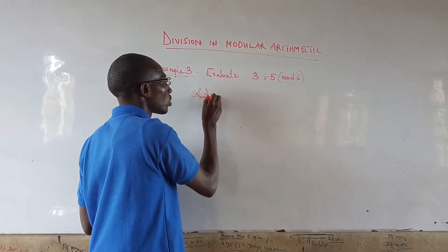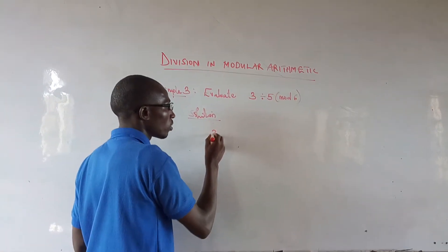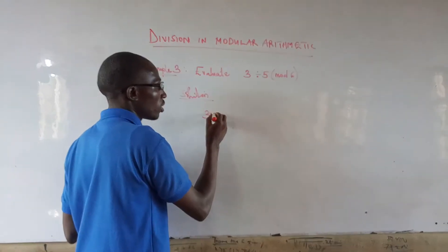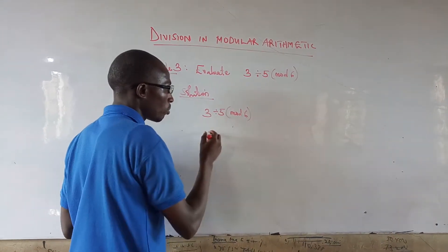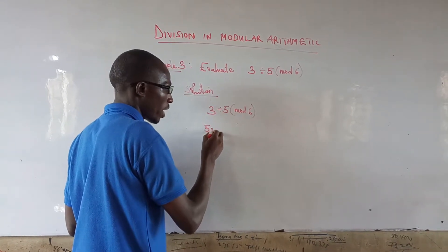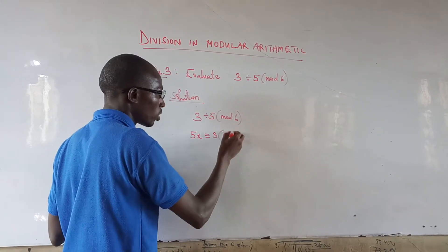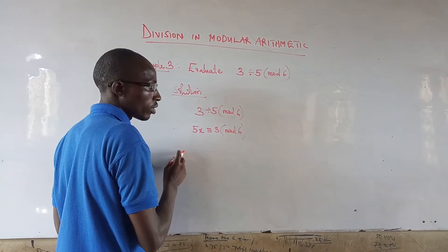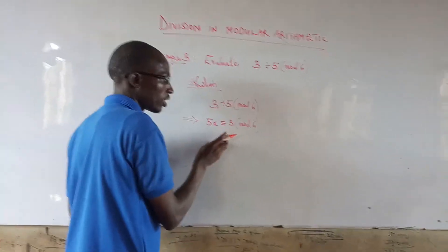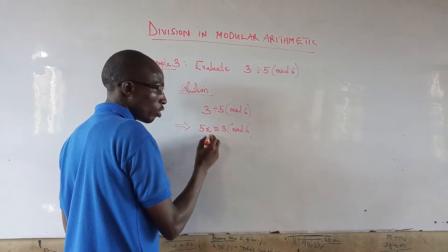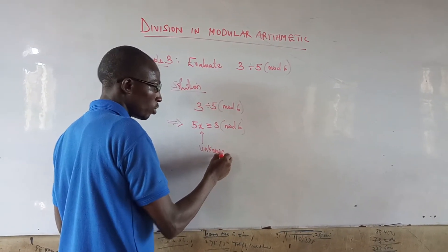The solution: we have 3 divided by 5, mod 6. This can be written as 5x congruent to 3, mod 6. Here, x is the unknown.